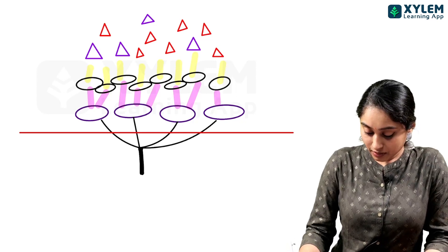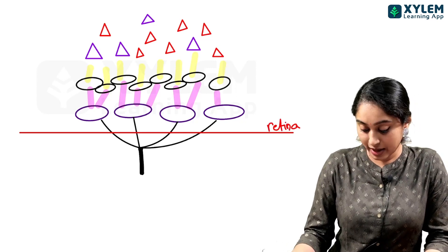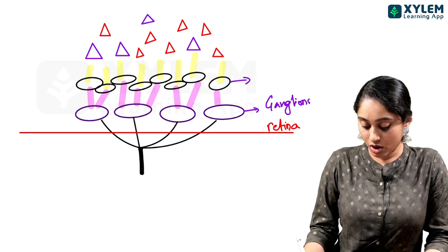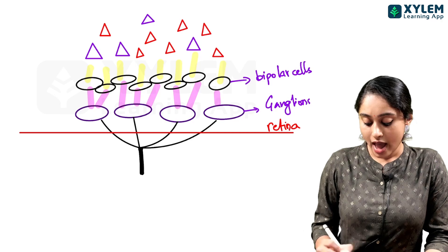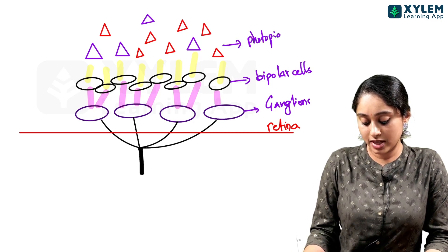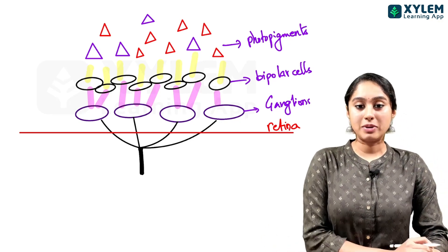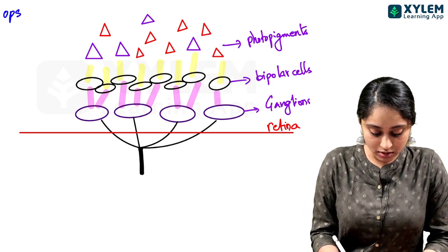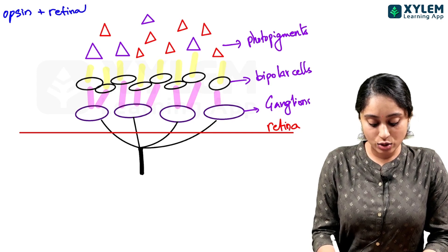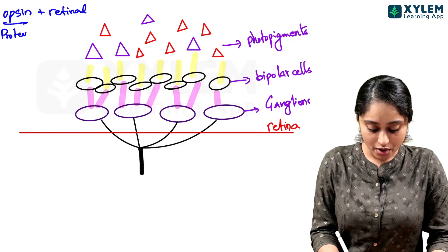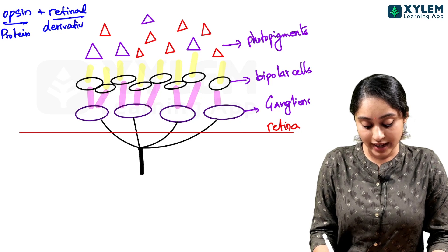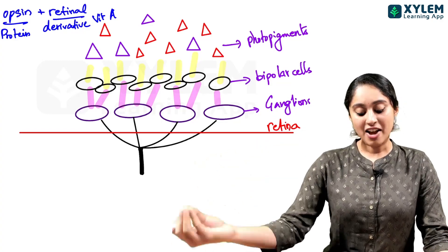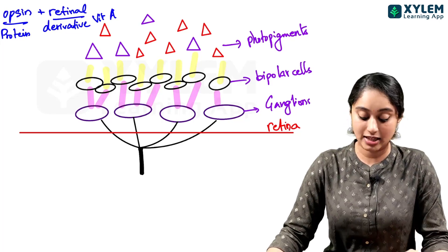We have one layer of ganglion cells. At that point, we have a layer of bipolar cells. And at that point, we have a layer of photopigments. In the photopigments, as I said, it is made of two parts. One photopigment is the opsin plus retinal. If you say it, it is a photopigment form. Opsin is the protein, whereas retinal is the derivative of vitamin A. That means carrots as well. It helps in your vision.